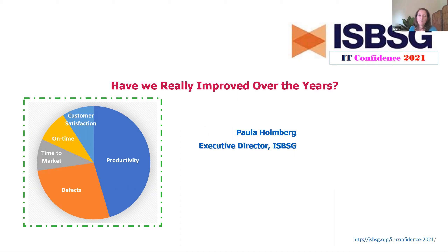If we want to have an impact on improving the defects delivered to production, that will have an impact on productivity, so it's good to understand what the impacts are of changing the other parameters as well.